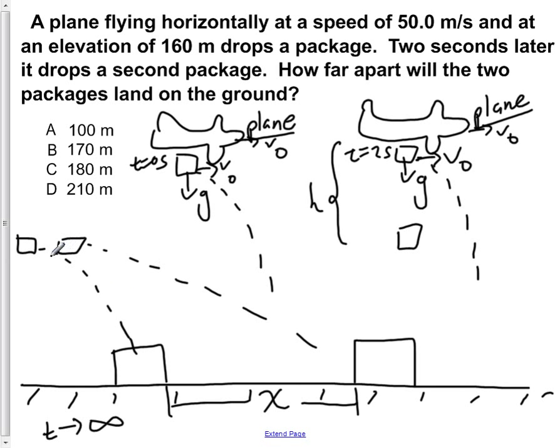Now, as these are falling, they're both moving with the same horizontal velocity. So by the time the first block hits, this one is still going to move for another two seconds, because it dropped two seconds later. So two more seconds after this one, this crate will also hit the ground.